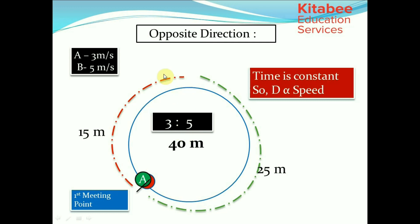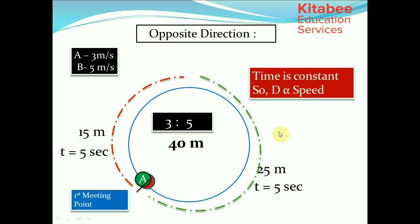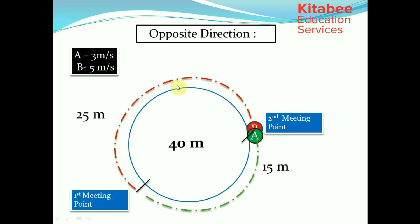Together they completed one lap — 15 plus 25 equals 40. The time taken to meet for the first time: A traveled 15 meters at 3 meters per second, so time equals 5 seconds, and similarly for B. They continue running and at the second meeting point, again A would have traveled 15 meters and B 25 meters. So the duration between the first and second meeting is again 5 seconds.